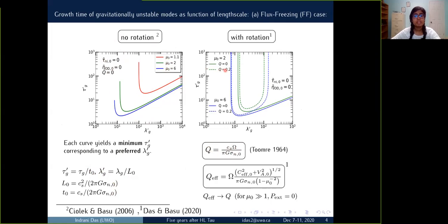However, with the inclusion of rotation we see the range of the unstable wavelength has been shortened from both ends, both from the longer end as well as from the shorter ends, and this is because rotation can stabilize the longer wavelength as well as the smaller wavelengths. In order to see the effects of rotation together with the magnetic field we derive a modified expression of Q which includes the magnetic dependence in terms of μ₀. And one more interesting point to see here that each curve yields a minimum growth time scale corresponding to a length scale which we are calling here preferred length scale. I will talk more about it in my next slides.